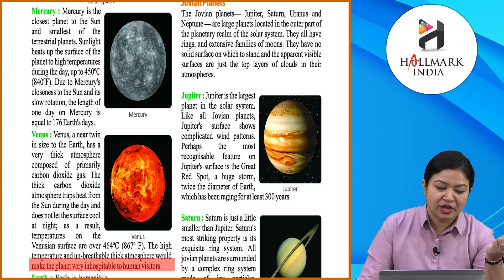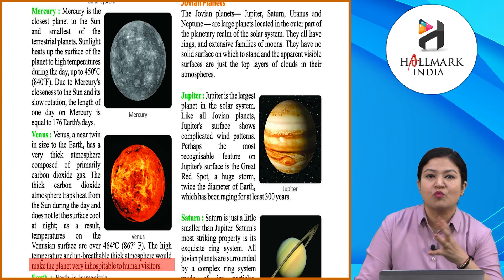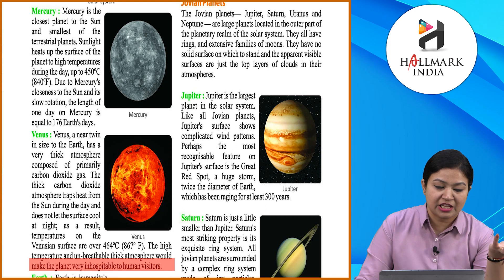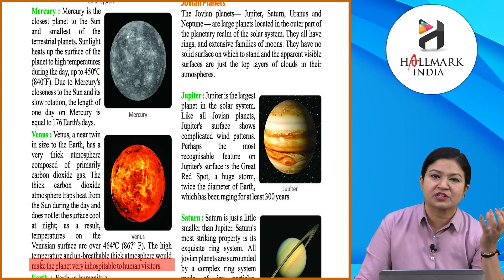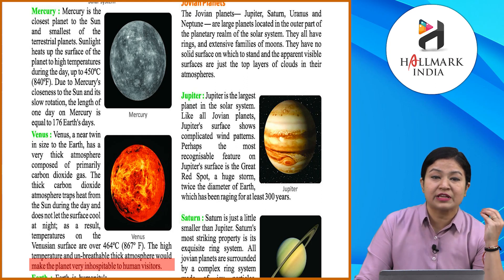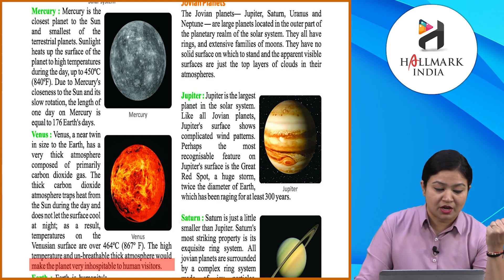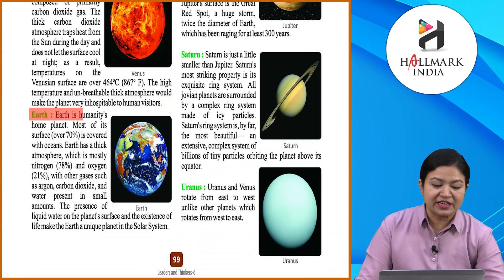Venus's size is almost equal to Earth's, but it is also close to the Sun and receives intense heat. Its atmosphere contains mostly carbon dioxide gas, which traps heat so effectively that Venus remains hot both day and night.